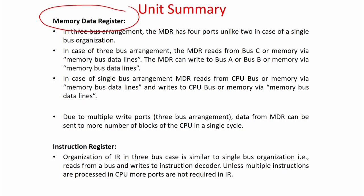In a three-bus architecture, the MDR has four ports unlike two in the case of a single bus organization. In single bus there is one input from memory and one output toward where you want to send the data. But in multiple bus architecture, MDR has four ports — it can write to bus A and bus B, read from bus C, and has a bidirectional connection to memory. Due to multiple ports, data from MDR can go to more blocks in a single CPU cycle.